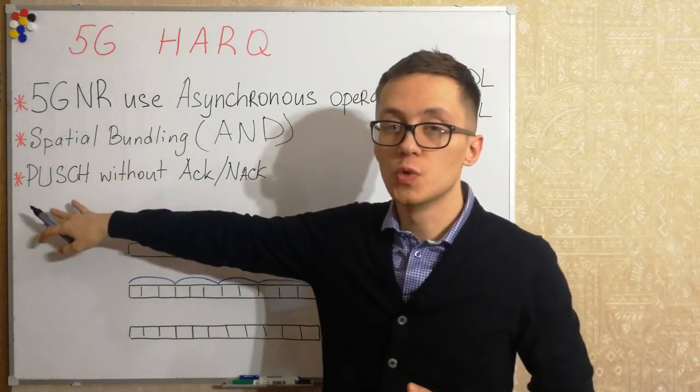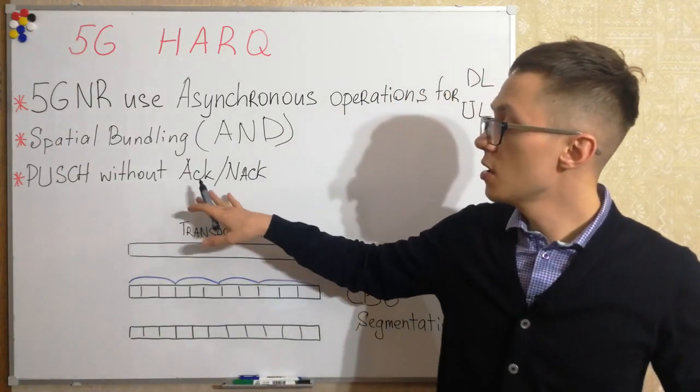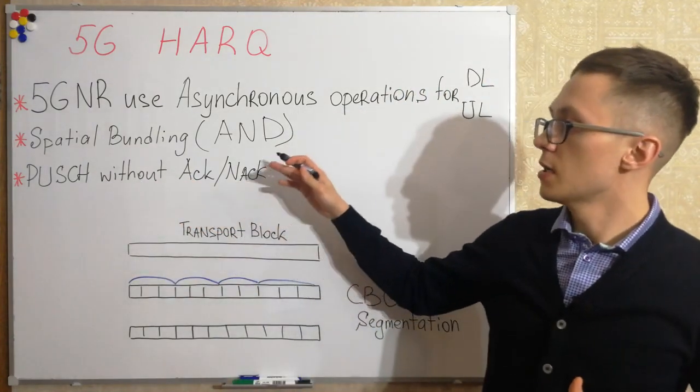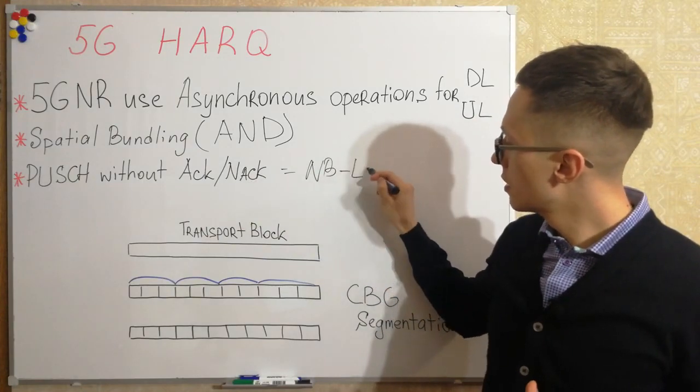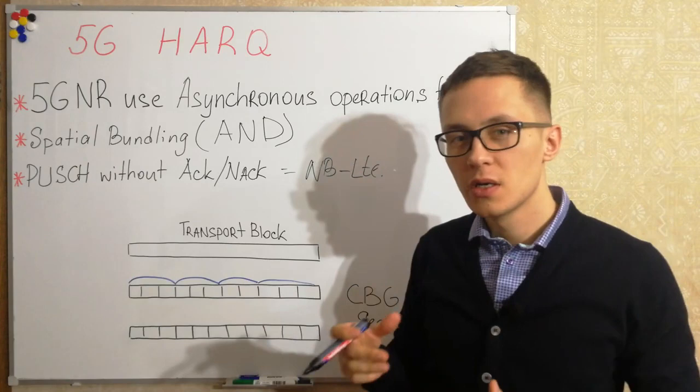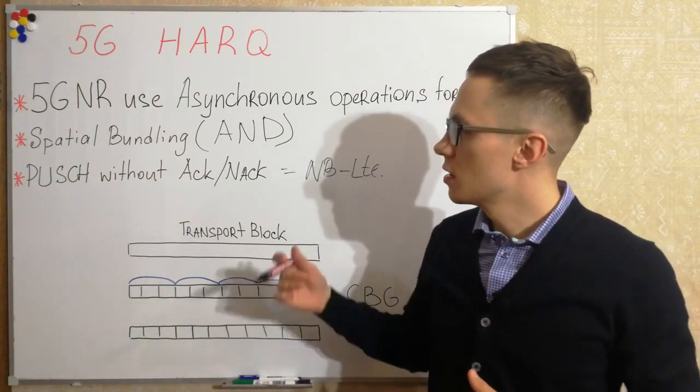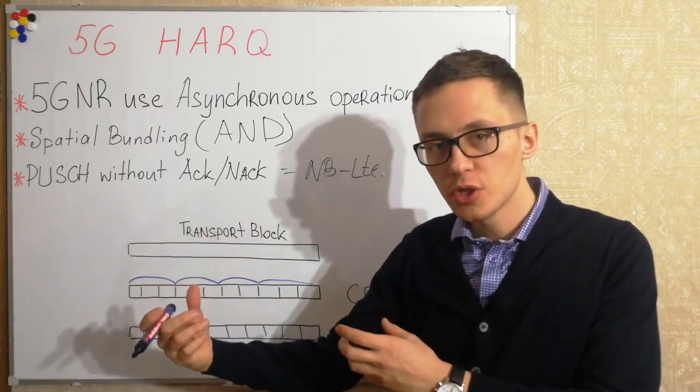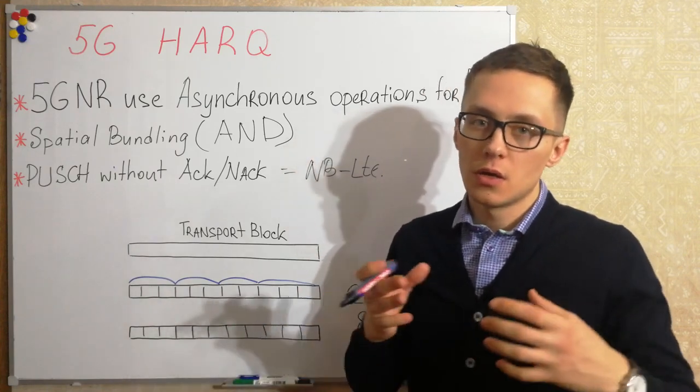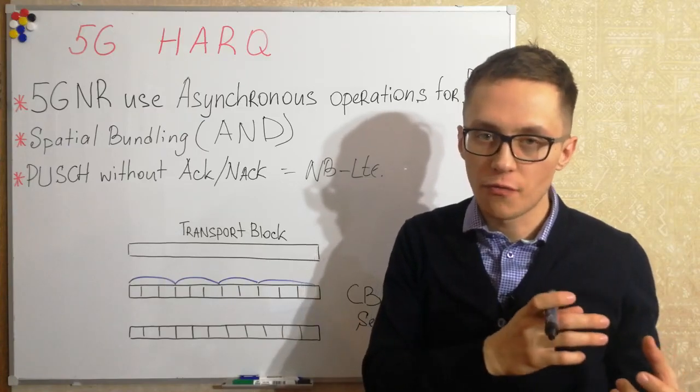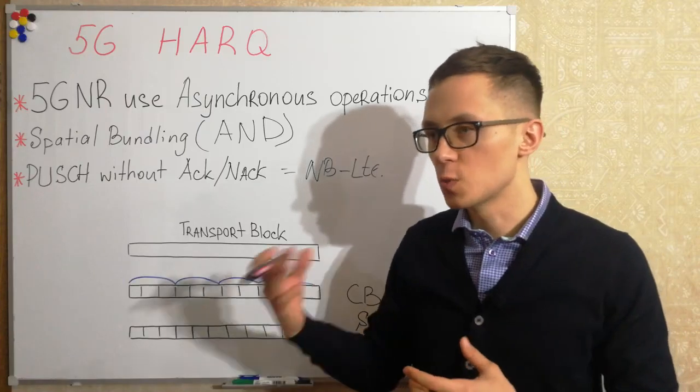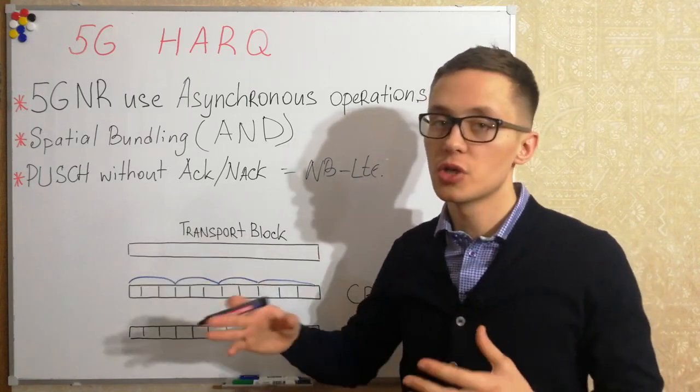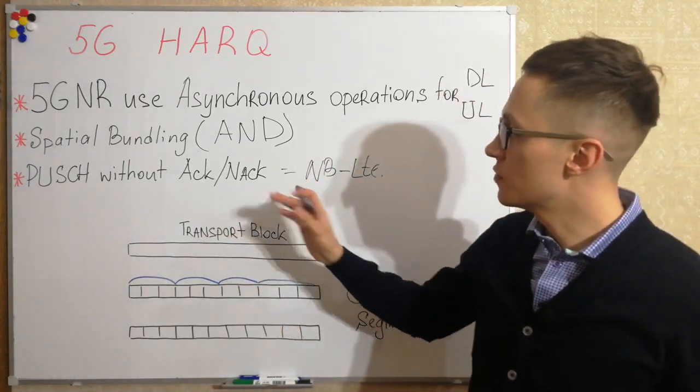The next I would like to talk about PUSCH without direct acknowledge and not acknowledge mechanisms. It is very similar to narrowband LTE. So there is a kind of indirect approach when user equipment cannot understand that PUSCH information is received by base station and decoded successfully because base station does not send any requests for retransmissions. So user equipment just waits for a certain time and if there is no any requests from base station, the UE can decide that PUSCH received successfully. So this can be also used in 5G network.